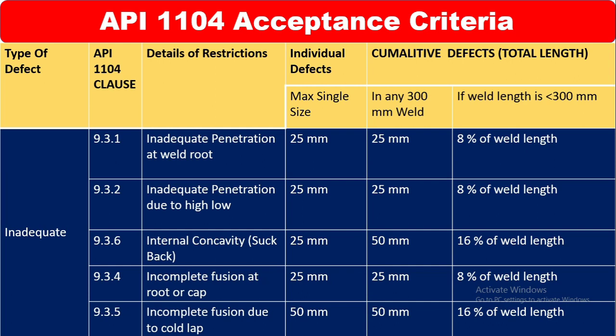Clause 9.3.2 mentions inadequate penetration due to high-low. The maximum single size is 25 mm, and in any 300 mm weld it is 25 mm. The same applies below and above — 8% of the weld length for cumulative defects.